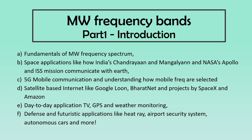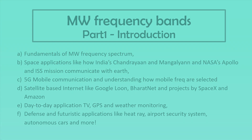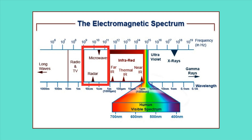Without any further delay, let's get started. The microwave spectrum is part of the electromagnetic spectrum and has a frequency range from 300 megahertz to 300 gigahertz. According to the definition by the Institute of Electrical and Electronic Engineers, commonly known as IEEE, the frequency bands in this range are named as follows in increasing order of frequency.